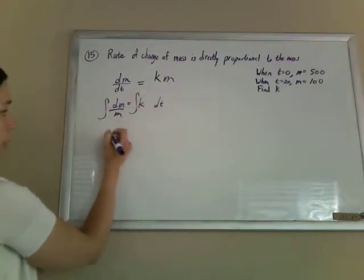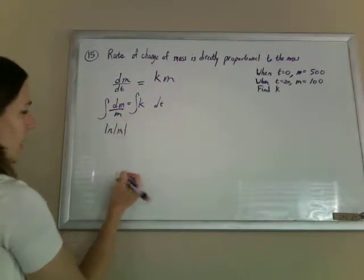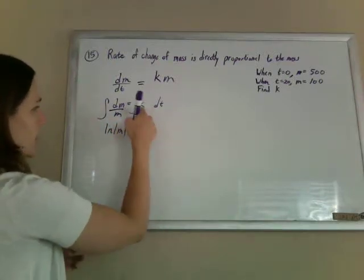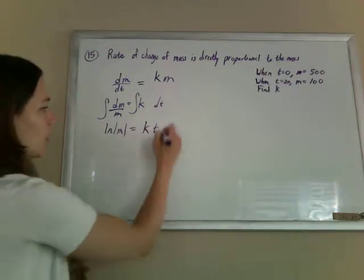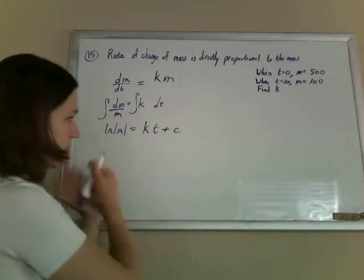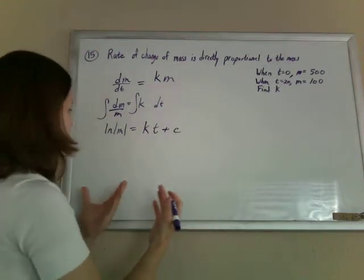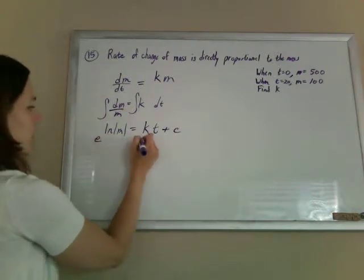So the integral of 1 over m is the ln of m, absolute value of m, and the integral of k is just kt, and add an arbitrary constant. You could add them to both sides, but then you can swing them over to make some sort of super constant. And so then if we solve for m...